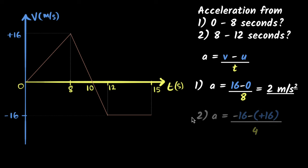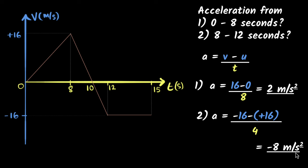So acceleration = (−16 − (+16)) ÷ 4 seconds = −32 ÷ 4 = −8 meters per second squared. We need to be careful with the negative signs. This tells us the acceleration in the second case is negative — it's in the opposite direction — and that's the reason the car turned around and slowed down. Whenever things are slowing down, we say it's a deceleration, or acceleration in the opposite direction.